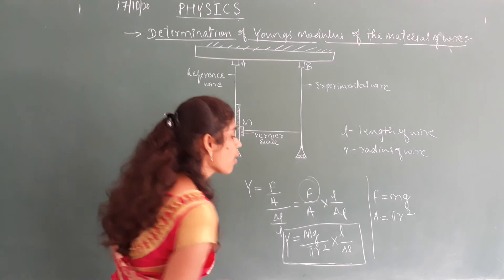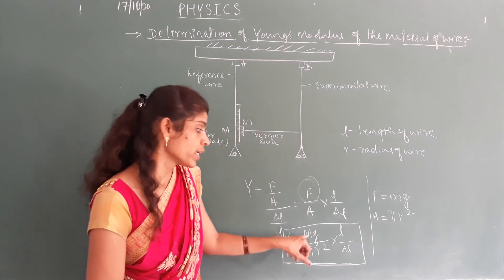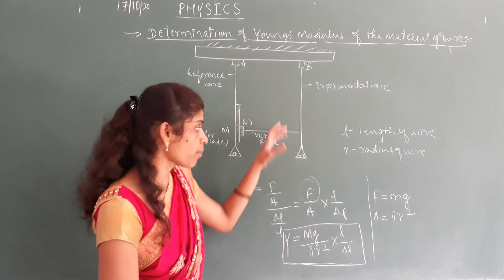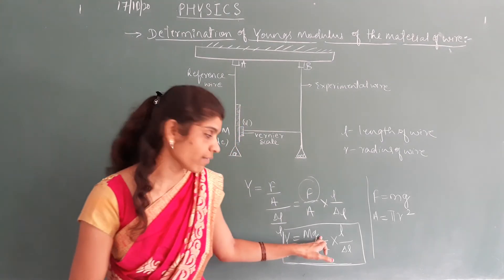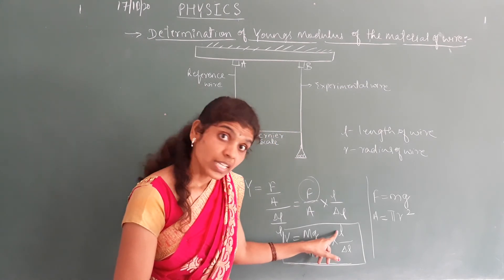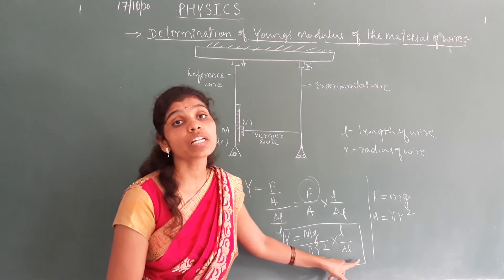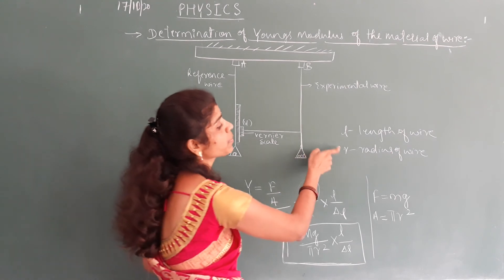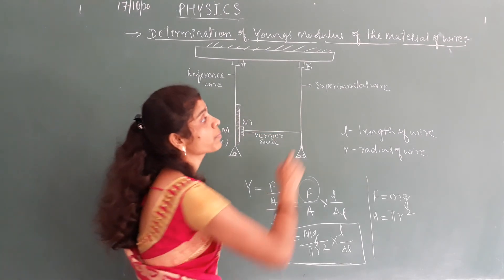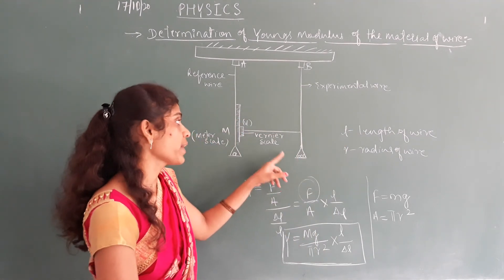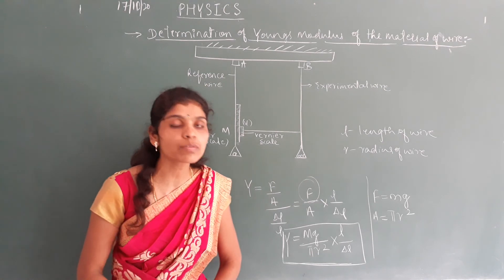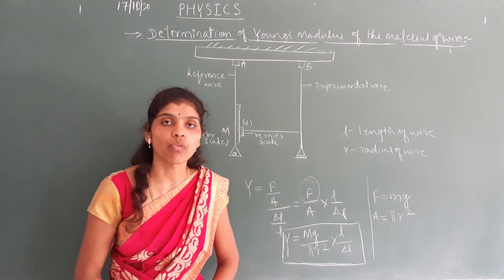Young's modulus of the wire is calculated using the formula Y equals Mg divided by pi R squared, into L divided by delta L, where M is the mass attached, G is the acceleration due to gravity, R is the radius of the wire, L is the original length, and delta L is the change in length. Both the reference wire and experimental wire have the same length and radius, and elongation is calculated by taking the difference of vernier readings. This is all about the determination of Young's modulus of the material of a wire.